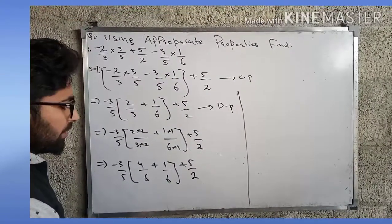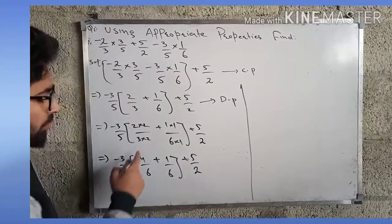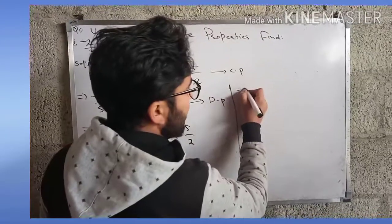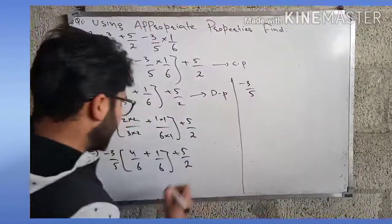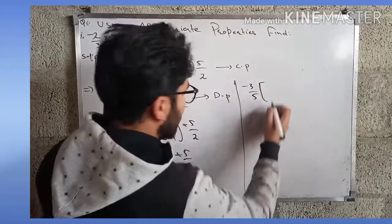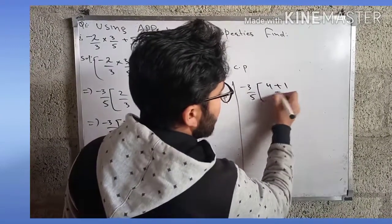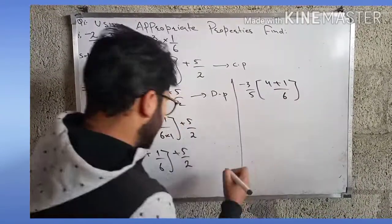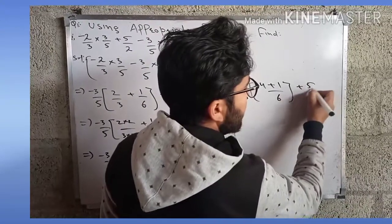Again we can solve this. We have same denominators so we can add the numerators. It will be written as -3/5 = 4 + 1 divided by 6 + 5/2.